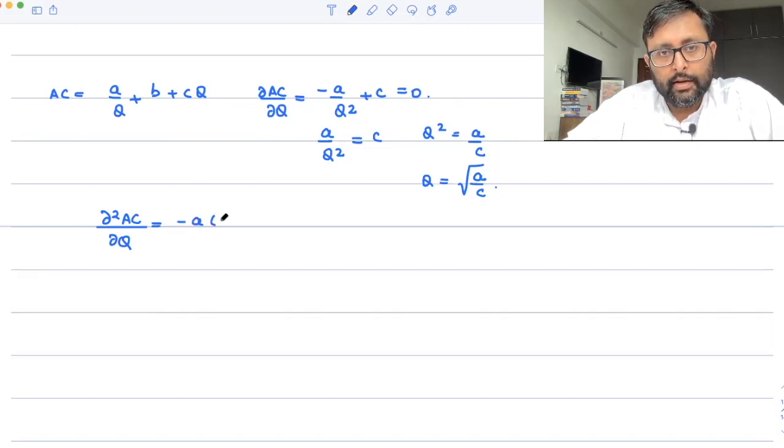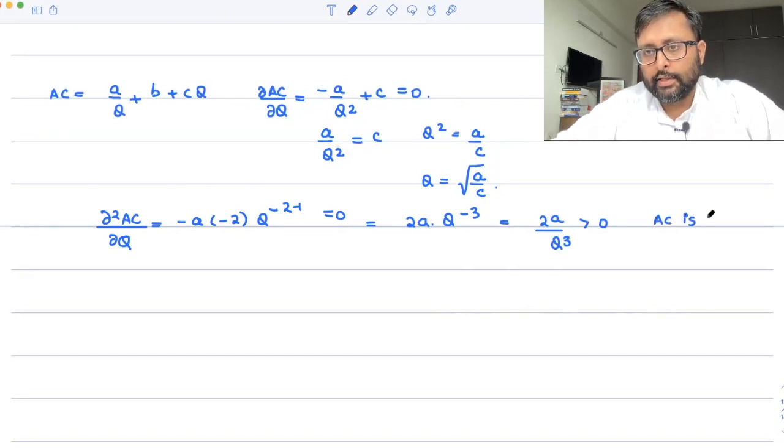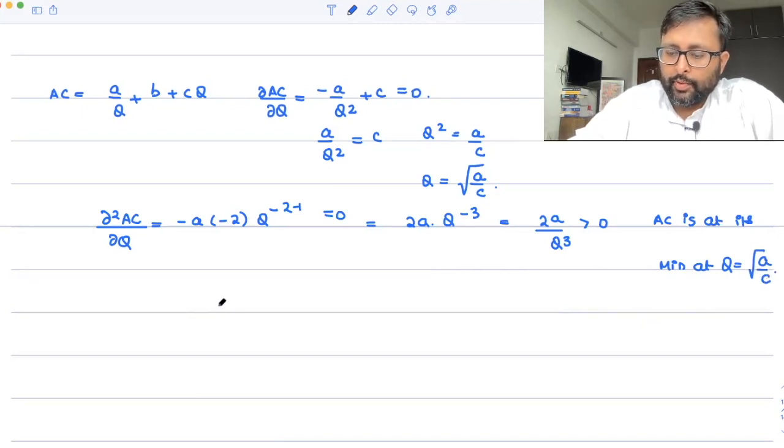So if you differentiate this thing again with respect to q, what is it that you will be getting? -a(-2)q^(-2-1) = 0. So this is basically 2a·q^(-3), which is 2a/q³. Presuming your a, b, c are greater than 0. So since a > 0, 2a > 0, AC is at its minimum at q = √(a/c), right? Okay.